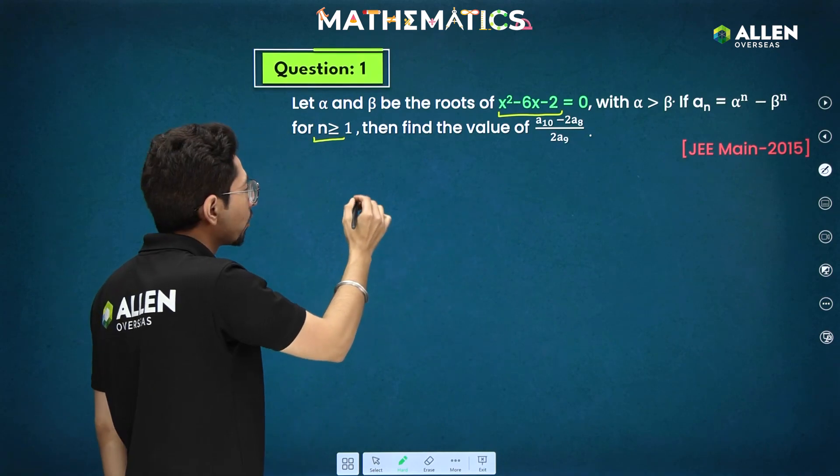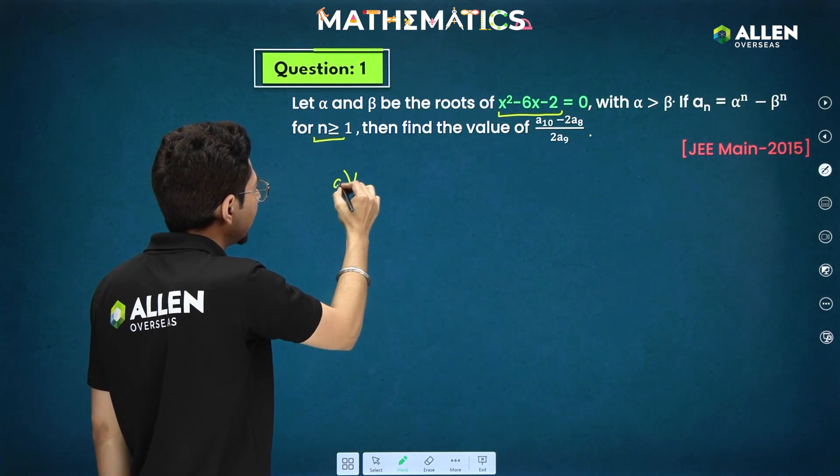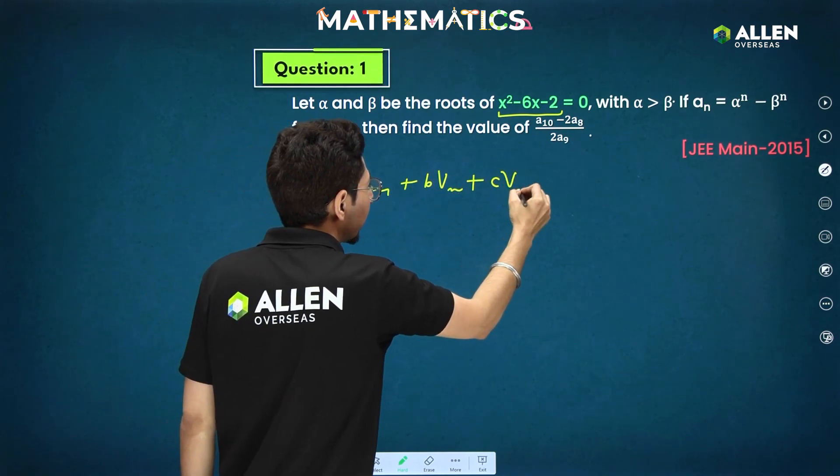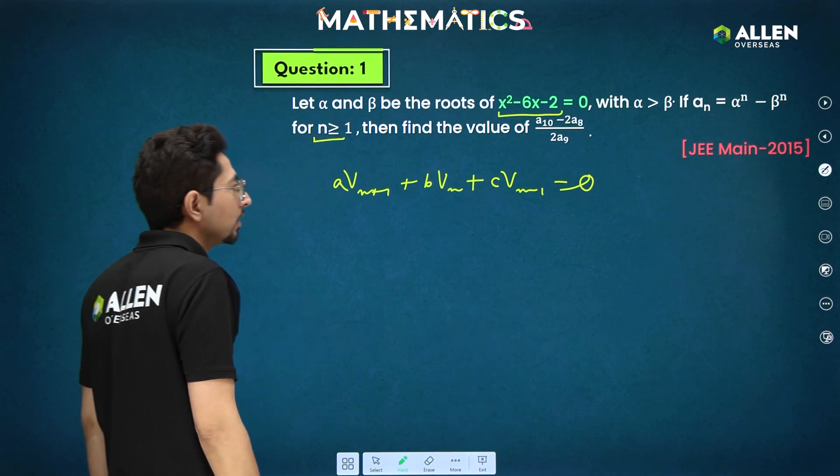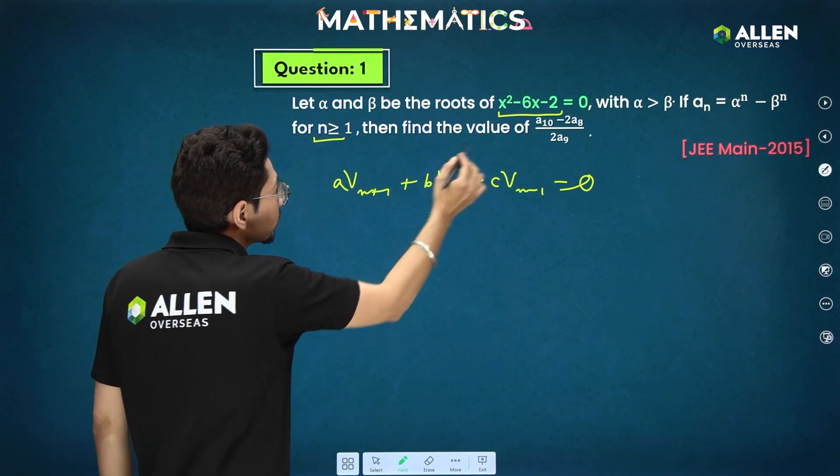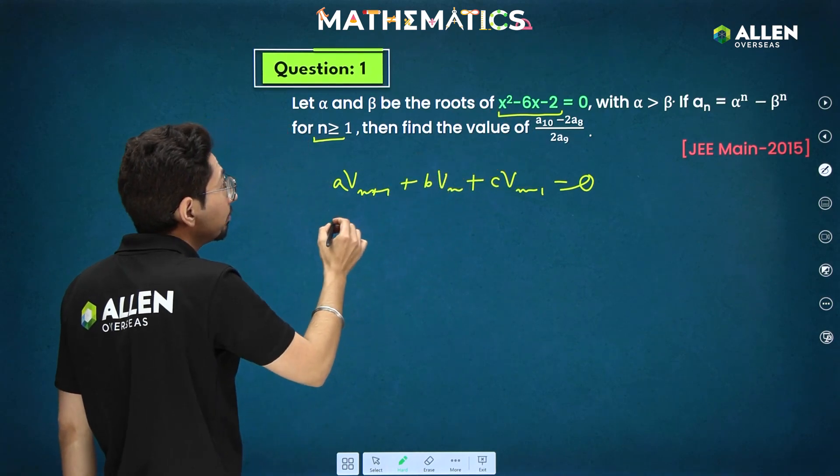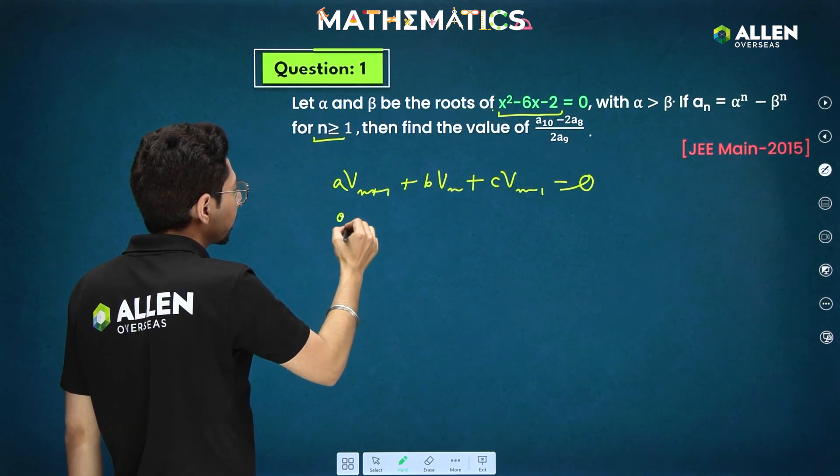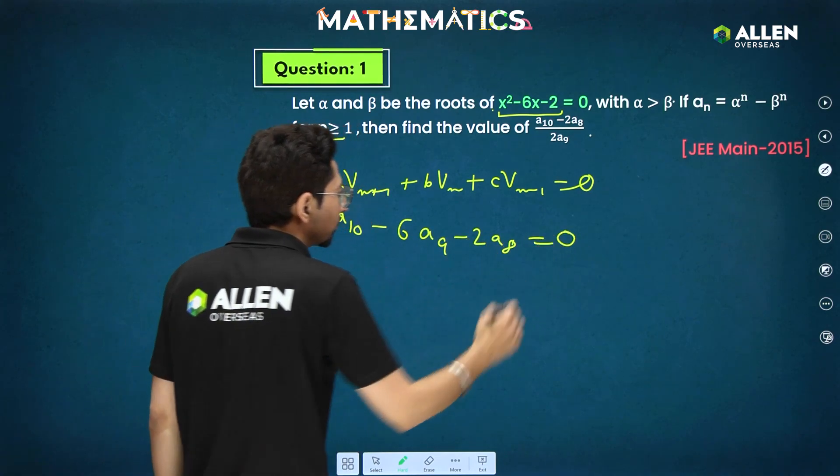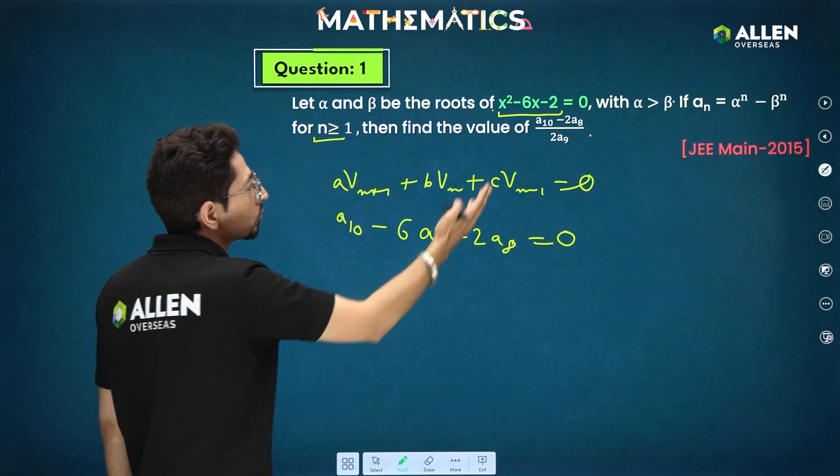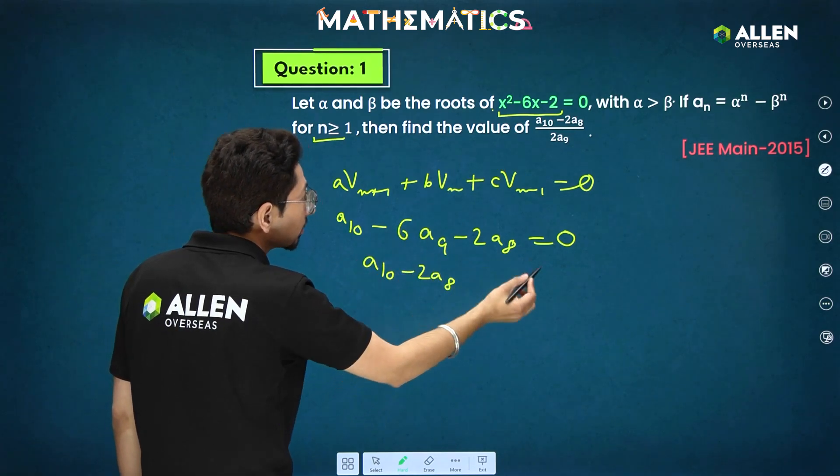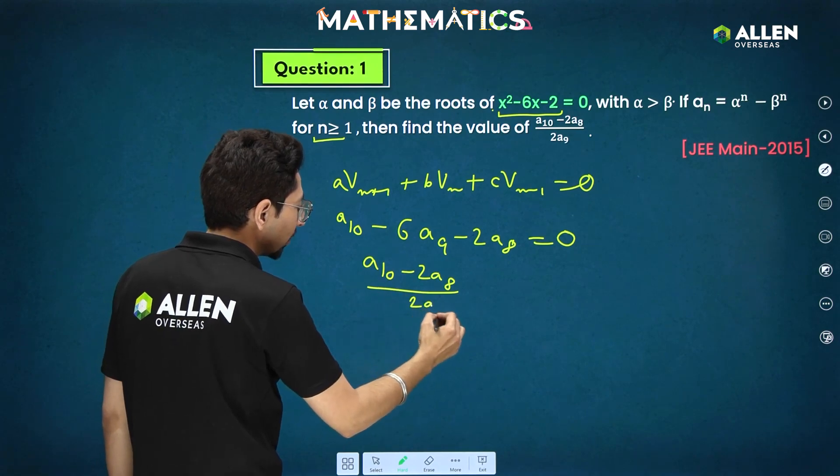So the first term that we require with respect to the formula, if you remember a vn plus 1 plus b vn plus c vn minus 1 that is 0. So it is just decreasing order only. So first I require 10 only that will be multiplied with 1. 1 into a10 minus 6 a9 minus 2 a8 that will be 0. Very simple equation. That only has to be related here. This is a10 minus 2a8 will be 6a9 or dividing by 2a9 that will be 3a9.